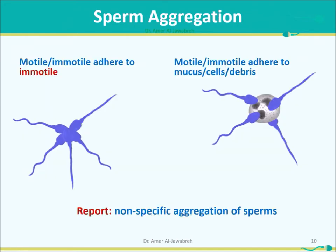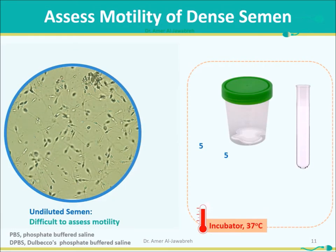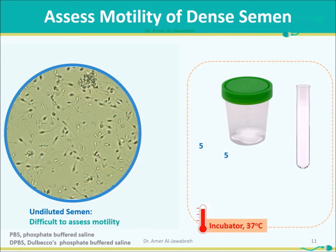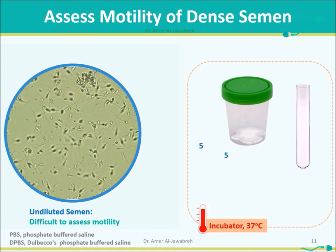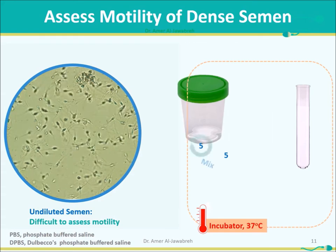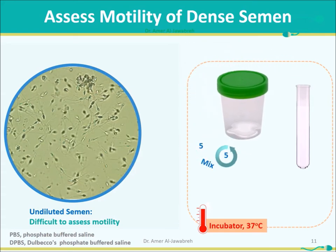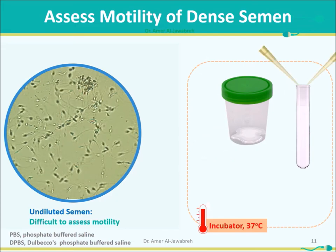Sperm aggregation differs from agglutination: it occurs when motile or immotile sperm adheres to immotile sperm, or when motile or immotile sperm adheres to mucus, cells, or debris. It should be reported as non-specific aggregation. For dense semen, which is difficult to assess, dilution with DPBS is required to disperse sperms. 100 µL of mixed semen is diluted with an equal volume of DPBS at 37 degrees centigrade.